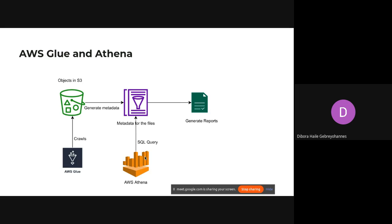AWS Athena basically uses the metadata or the schema generated by AWS Glue to generate reports in a very short amount of time.